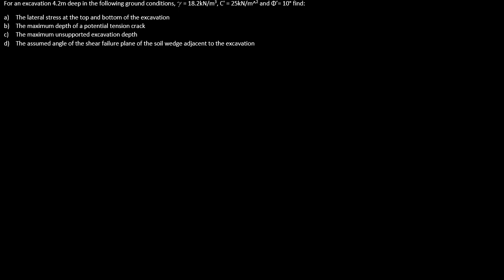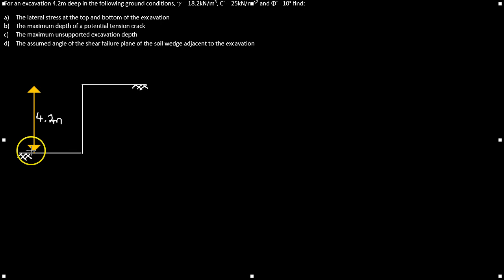Part A asks us to find the lateral stress at the top and bottom of the excavation. The best way to start is by drawing a diagram so we can see what's going on. We draw the excavation, knowing the depth is 4.2 meters, and it's always good to draw the pressure diagram showing the distribution of pressure through the soil.